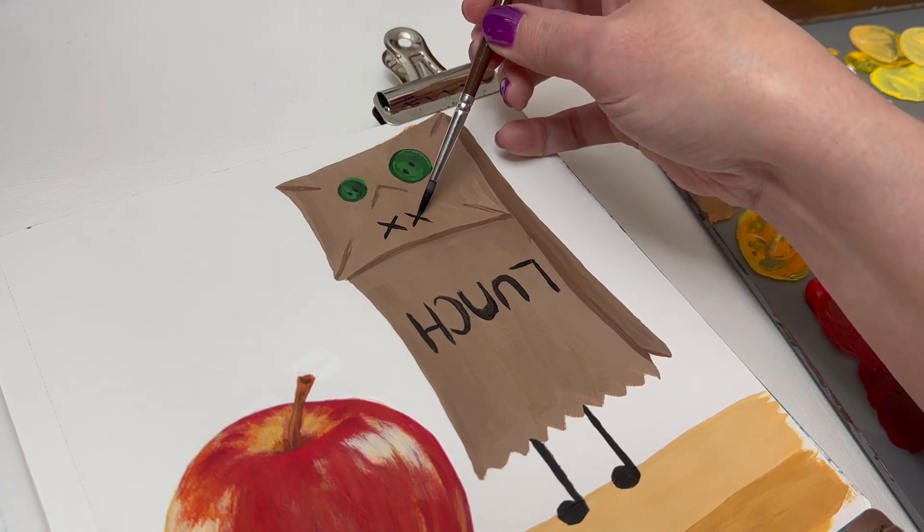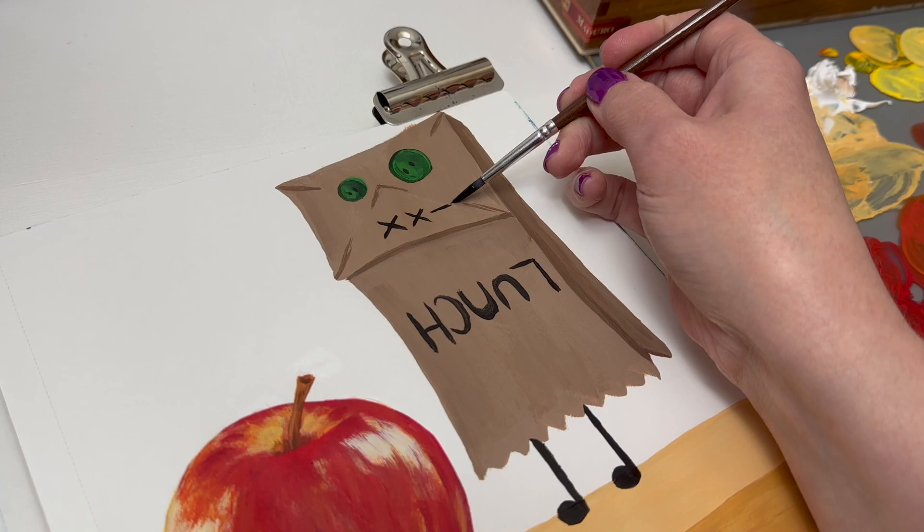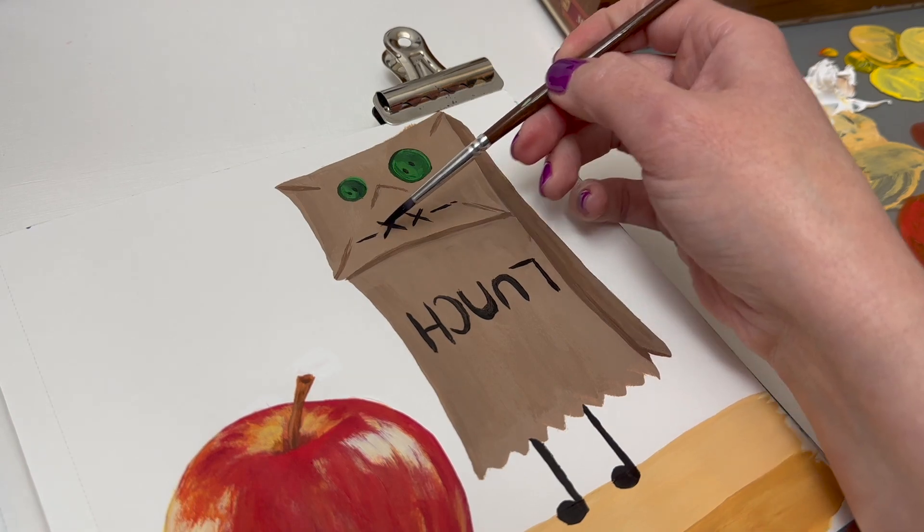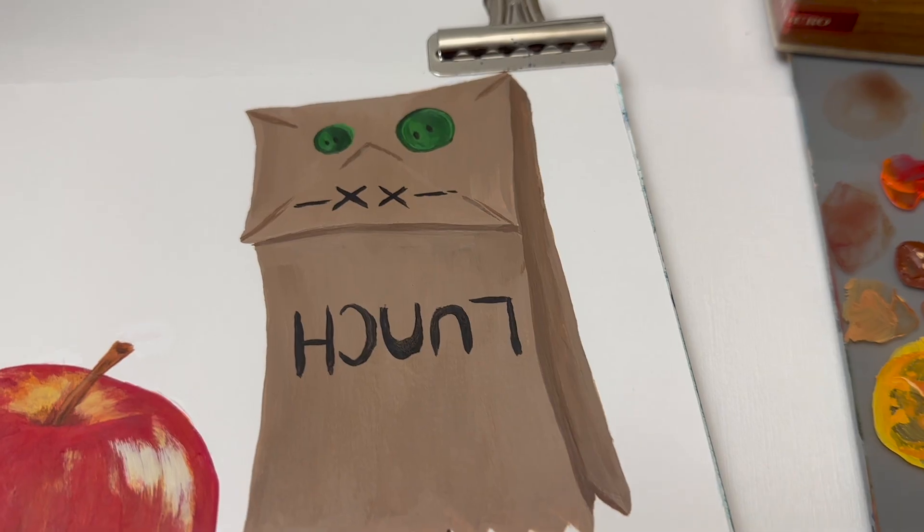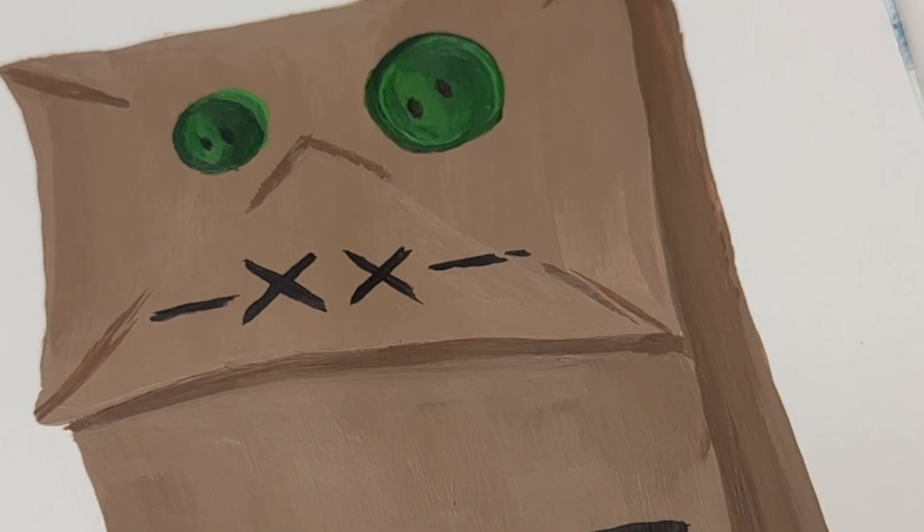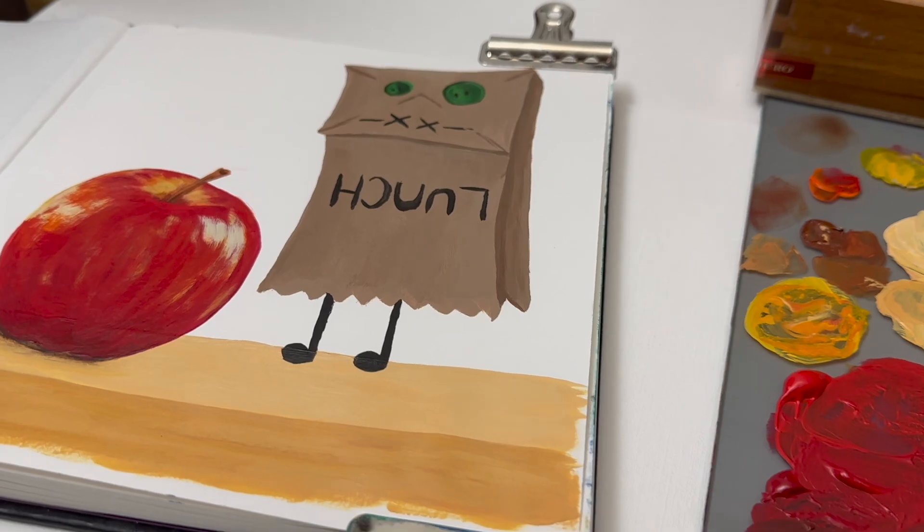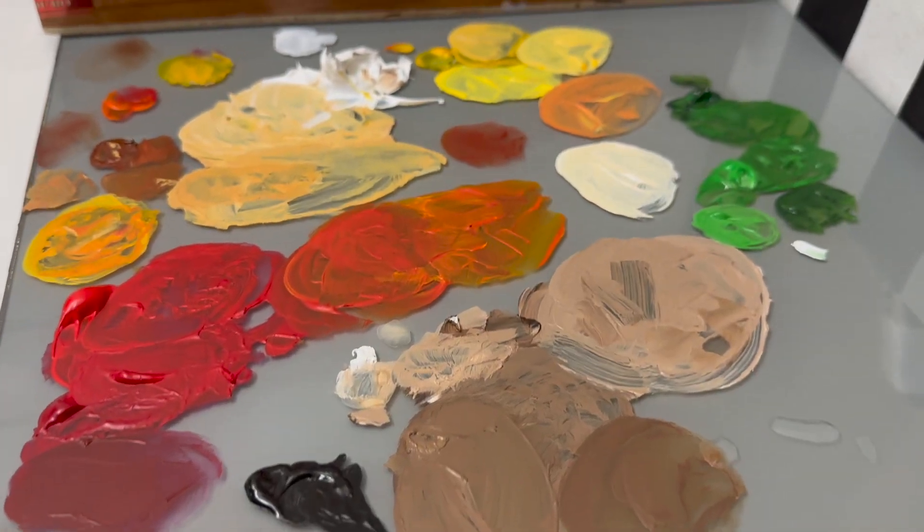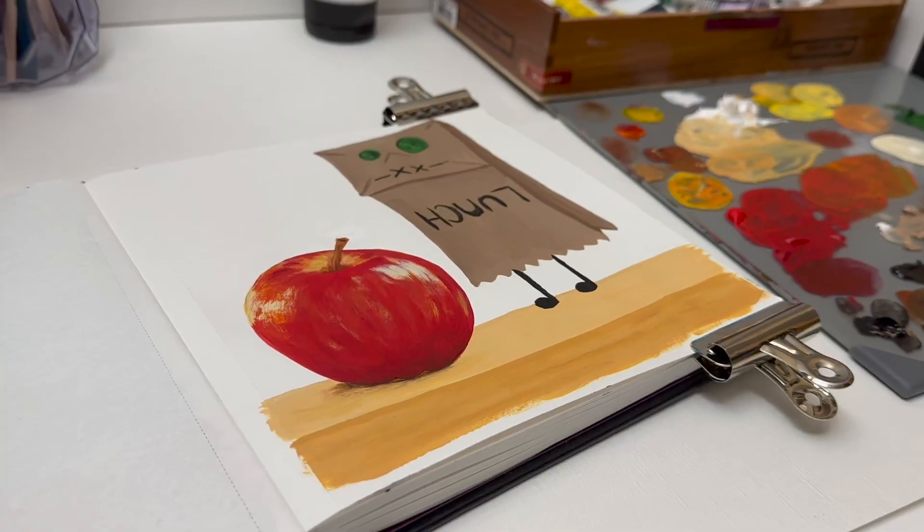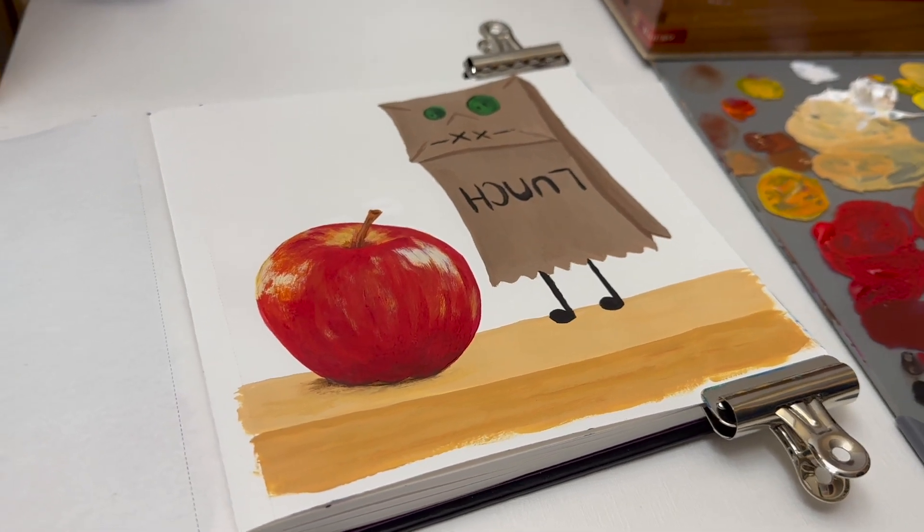Sometimes on the bottoms of bags they have like weird markings, so I put two X's and some lines and I kind of broke this line to give the illusion of that crease. And I love how this turned out. It was such a helpful practice session. I highly recommend just getting your sketchbook, choosing a fruit—it doesn't have to be an apple, it can be anything that you like.